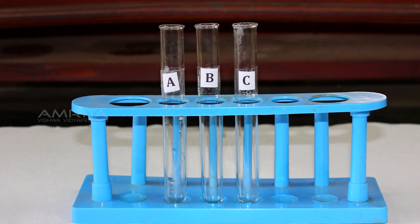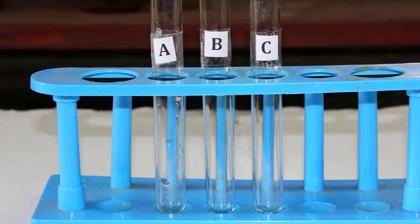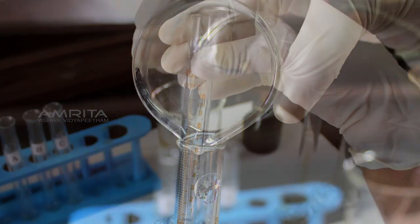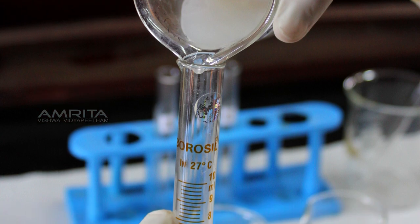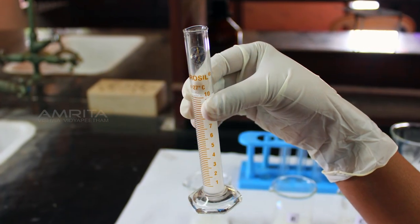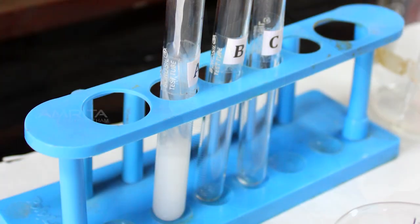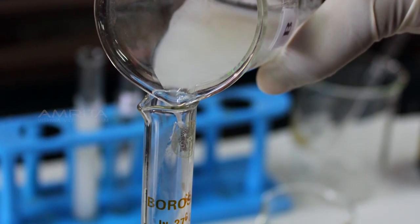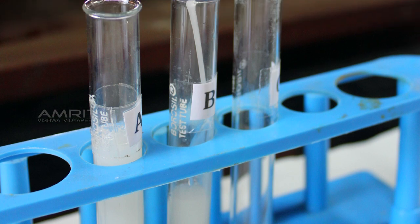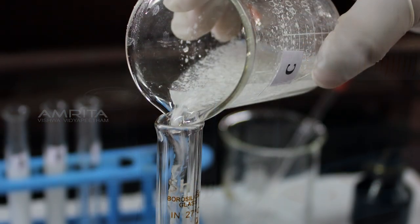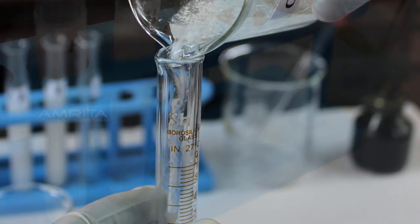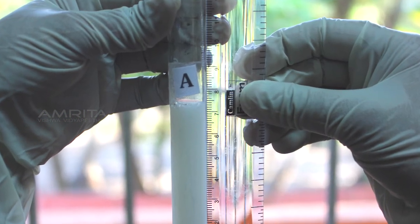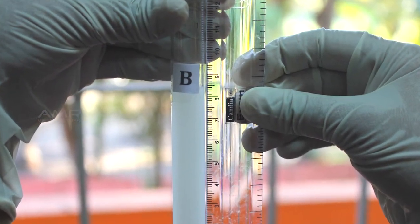Place three test tubes labelled as A, B and C in a test tube rack. Take a measuring jar and pour soap solution from beaker A into the measuring jar and measure 10 ml of soap solution. Pour it into test tube A. Similarly, pour 10 ml of soap solution from beaker B into test tube B and from beaker C into test tube C using separate measuring jars. Measure the initial length of soap solution in each test tube using a measuring scale.